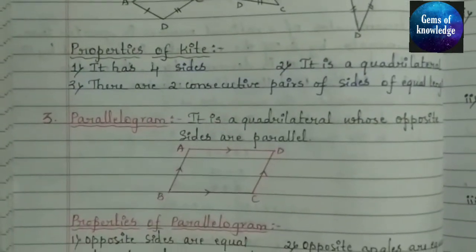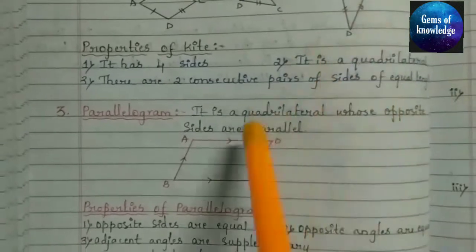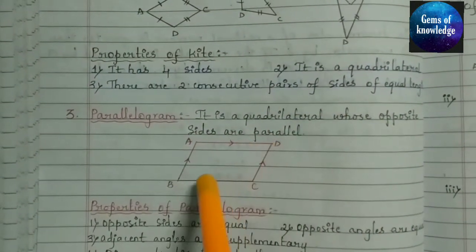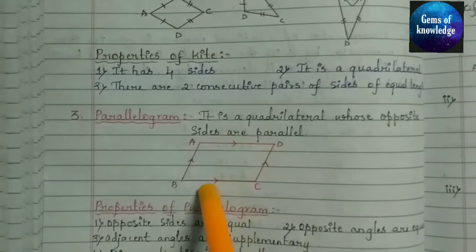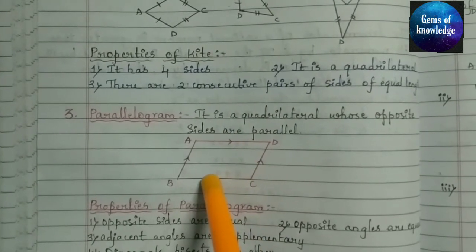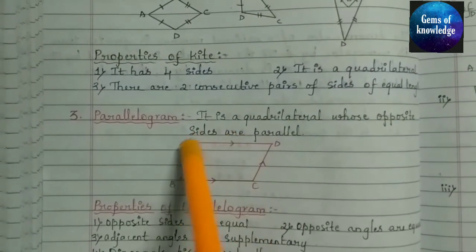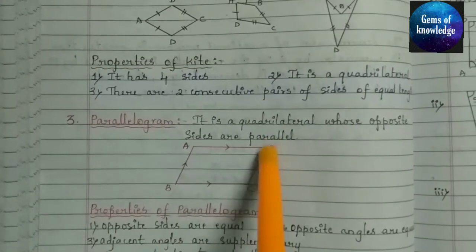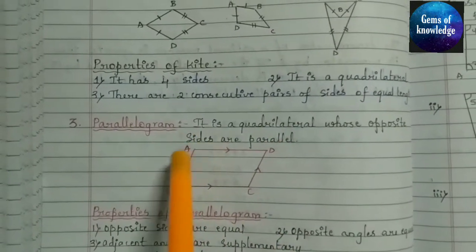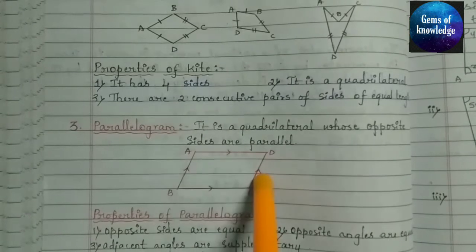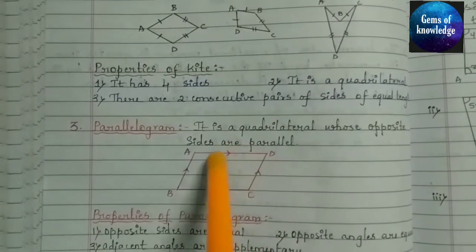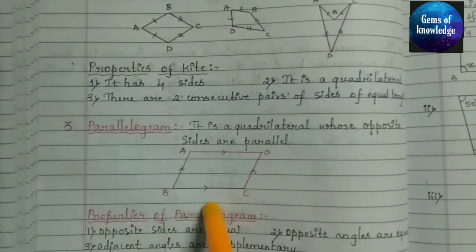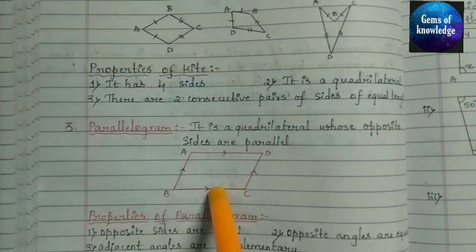Next comes the parallelogram. A parallelogram is a quadrilateral whose opposite sides are parallel. Here AD is equal to BC and CD equals AB, so these two sides are parallel to each other, and the other two sides are also parallel — opposite sides must be parallel to each other.